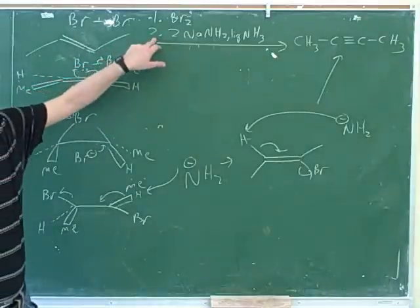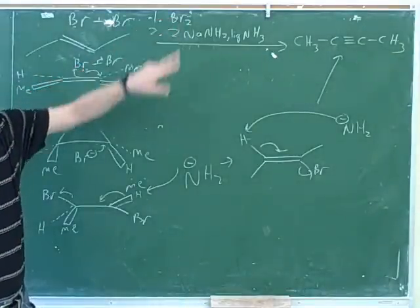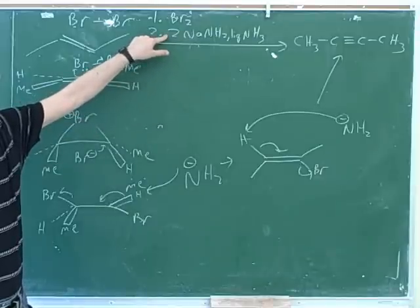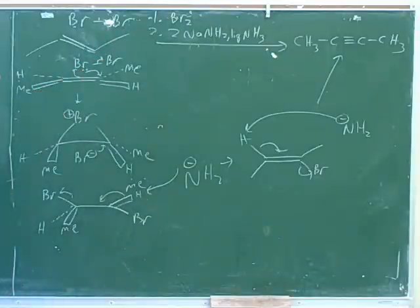These do have to be numbered as two separate steps. First you do the halogenation, and then when that's done you would do the double elimination.